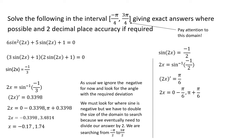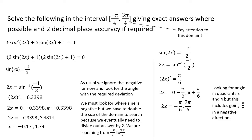Each of those 2x values must be divided by 2. To divide a fraction by 2, multiply the denominator by 2. So minus pi over 6 becomes minus pi over 12, and 7 pi over 6 becomes 7 pi over 12. Those are our final x values from the second factor.